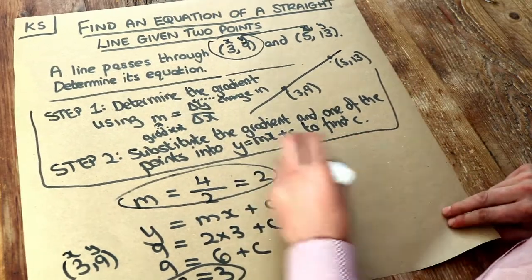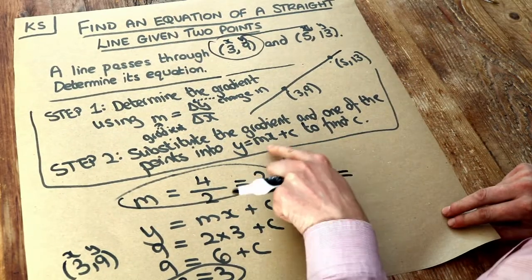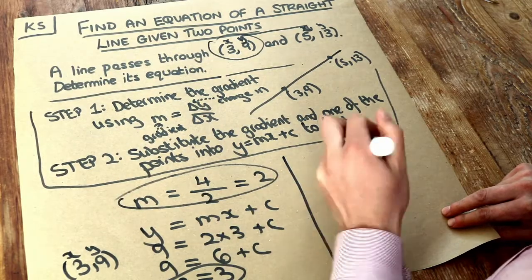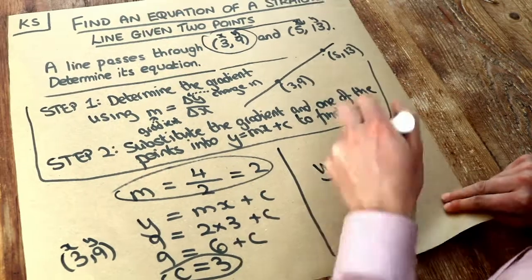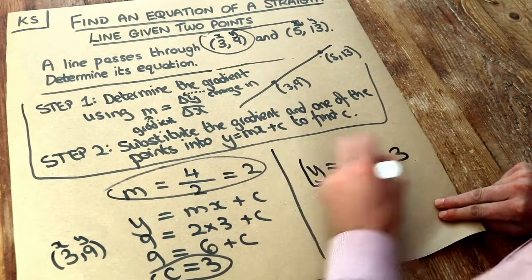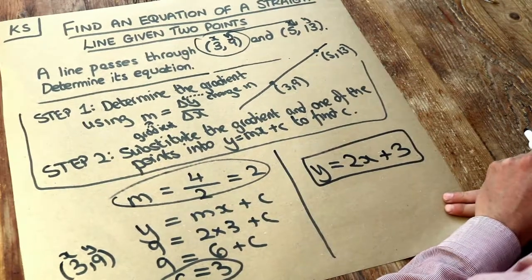So, we've got y is equal to mx, so 2x plus c plus 3, and that is the equation of our straight line. That's the final answer.